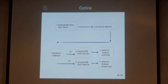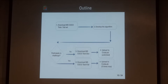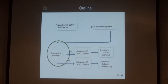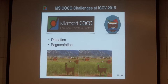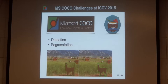The next step in participating in this challenge, after a competitor downloads the dataset and develops their own algorithm, is to compete. This year at ICCV, our MS COCO challenge involved detection and segmentation. Detection involves making a bounding box decision, while segmentation involves making a full estimation of the instance segmentation.